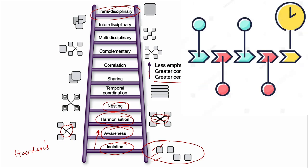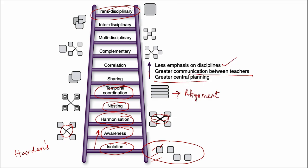Next step in the Harden's ladder of integration is the temporal coordination where in this step, the timetable is adjusted so that the related topics within subjects are scheduled at the same time with similar topics being taught on the same day or week. This is otherwise called as alignment which was described as one of the steps in the ladder for integration. This can be called as alignment also. That is, the temporal coordination which is also a step in this ladder of integration.